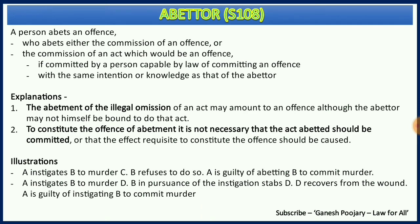Subsection 2 states: to constitute the offense of abetment, it is not necessary that the act abetted should be committed, or that the effect required to constitute the offense should be caused. Two important points: first, the act need not actually be committed for abetment to have occurred; second, the anticipated result need not have happened — even if the result is more or less than expected, abetment is still established.